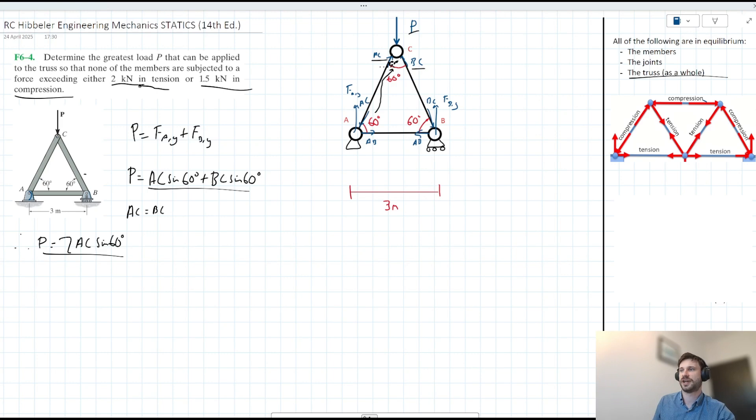So the question asks us, we want to find a value for P such that none of the members are beyond 2 kN in tension or 1.5 kN in compression. We can look at members AC and BC here and know that they are in compression. So we kind of want to work with this 1.5 kN threshold here. We want to say, for example, AC is smaller than 1.5.